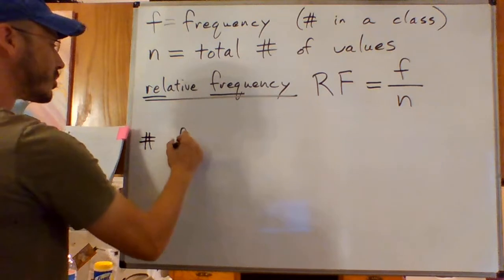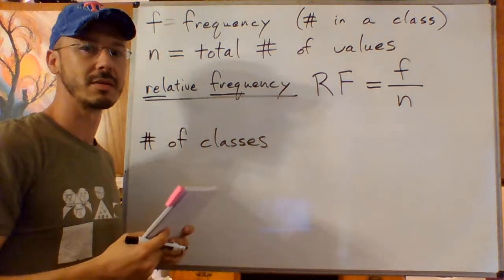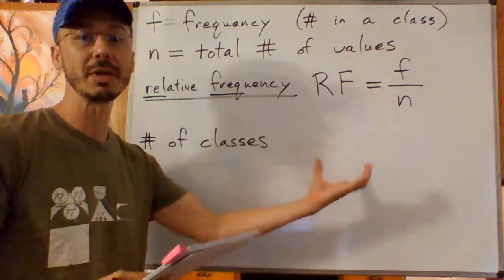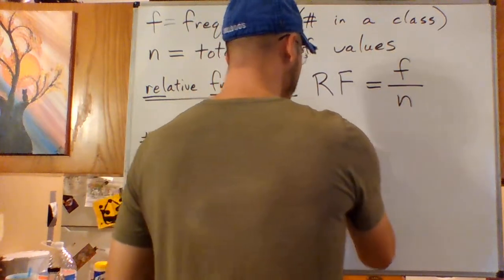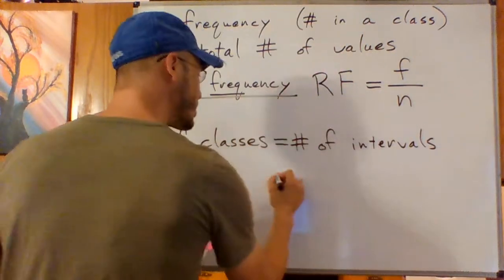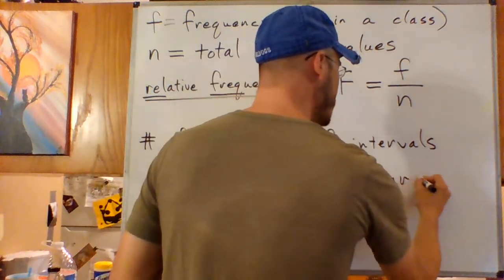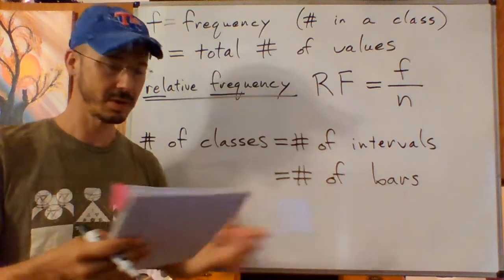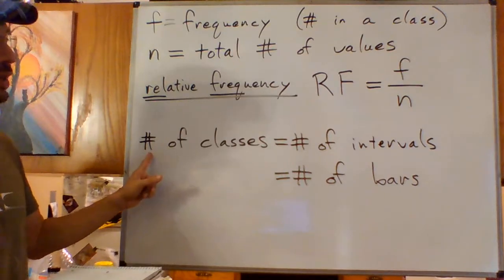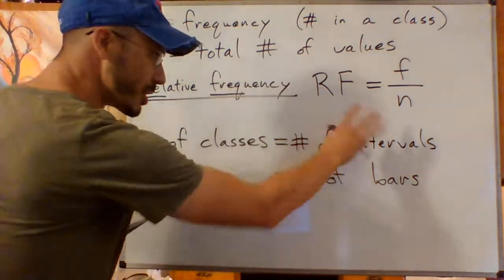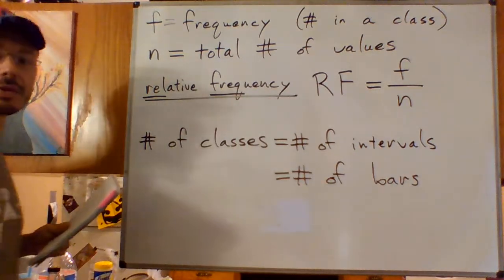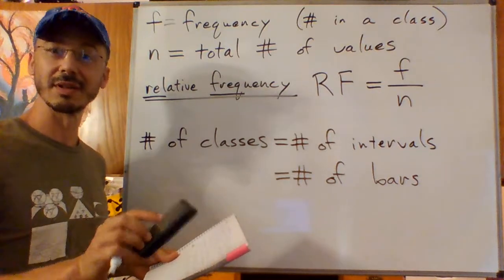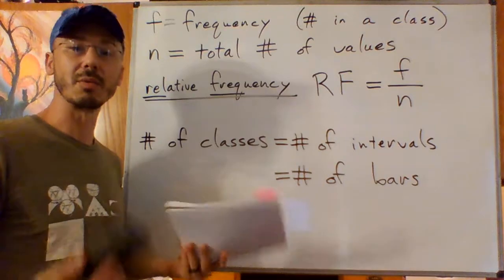I've got one more note about this before we start an example where we'll build our own histogram. The number of classes. Not the number of values. That's n. The number of classes that we divide them up into. That is equal to the number of intervals. And that is equal to the number of bars in our histogram. So we're not making a bar graph with the separate bar pieces. But histogram still is made of bars.